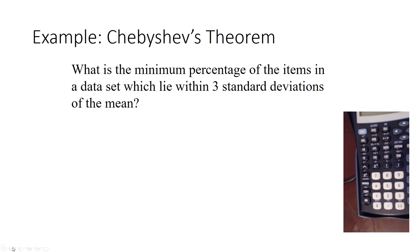So as an example where you might be asked to use Chebyshev's theorem, what's the minimum percentage of the items in a data set which lie within 3 standard deviations of the mean? So before I work this problem out, I just want to call your attention to the word minimum.